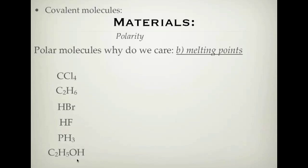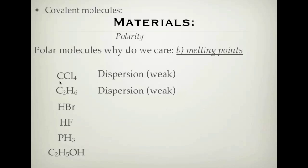Now let's look at what type of molecule each one is and what type of bonds they would form. Carbon tetrachloride (CCl4) displays weak dispersion forces because, if you draw it properly, you see it has a tetrahedral arrangement of chlorines around the carbon — it's symmetrical and therefore a non-polar compound. Ethane (C2H6) also has dispersion forces because it has symmetry within it, making it a non-polar substance.